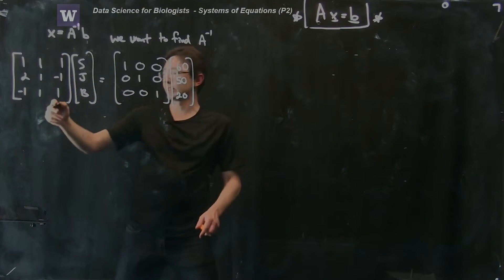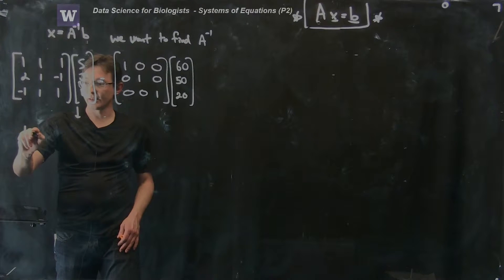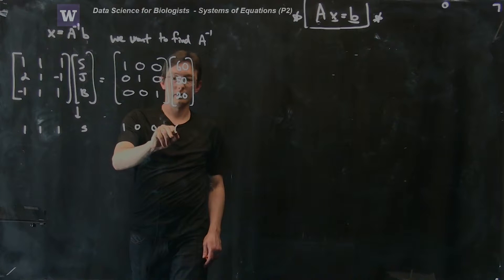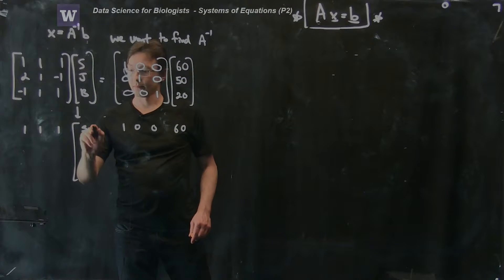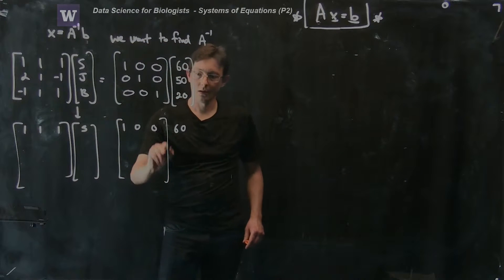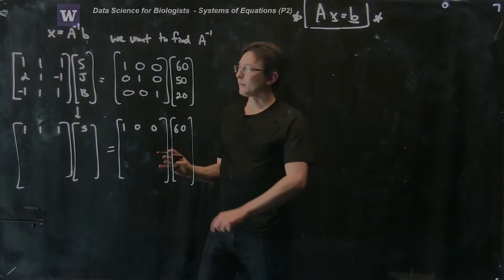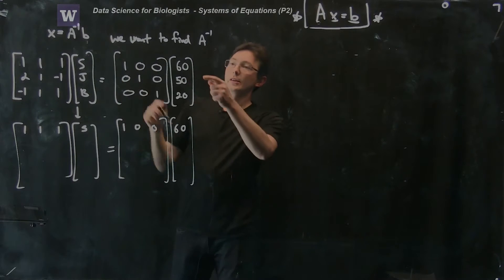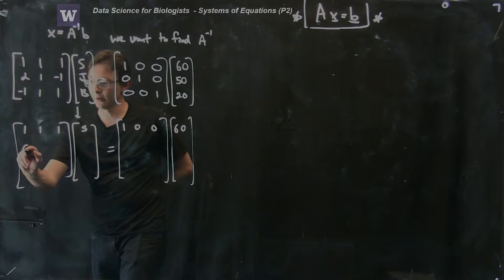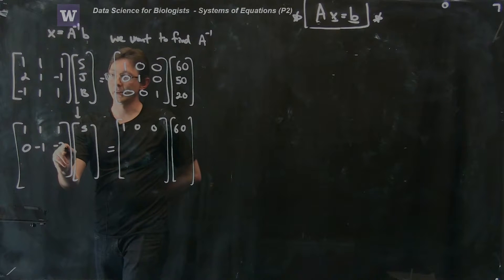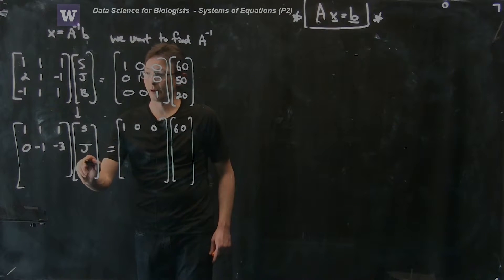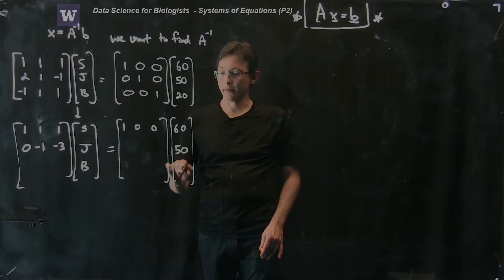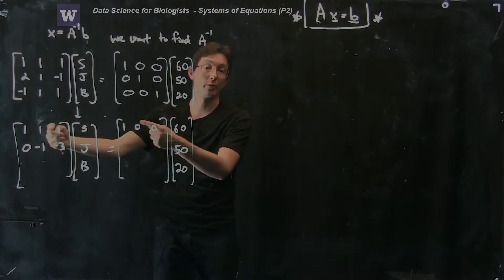We're going to subtract two of the top row from the second row, and also add the first row to the third row. The first row remains unchanged: 1, 1, 1. Subtracting two of the first row from the second row gives 0, minus 1, minus 3. And adding the first row to the third row gives 0, 2, 2 for the third row.